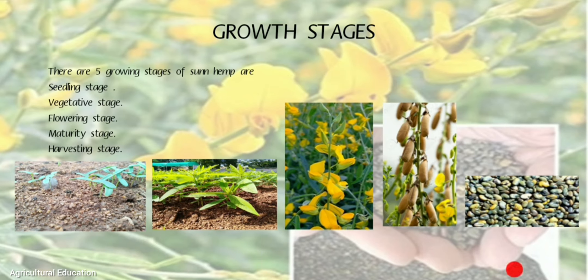Growth Stages: There are five growth stages of sunhemp: seedling stage, vegetative stage, flowering stage, maturity stage, and harvesting stage.